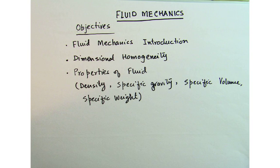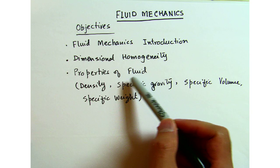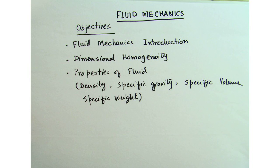Hello everybody. This is the first lecture from a series of lectures on fluid mechanics. The objectives of this lecture are listed here. First I will give you a brief introduction of fluid mechanics, then I will talk about dimensional homogeneity, then I will talk about properties of the fluid like density, specific gravity, specific volume, and specific weight. Before I start, I want to point out some books that are very good in this area.